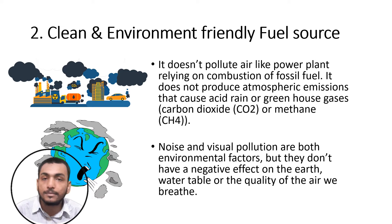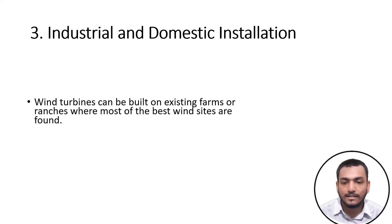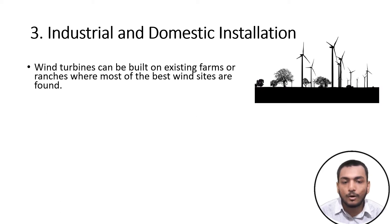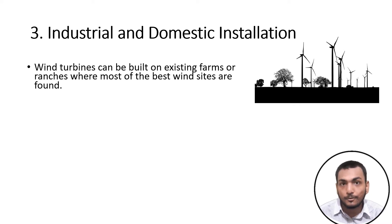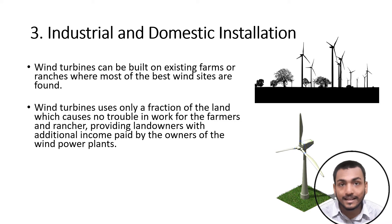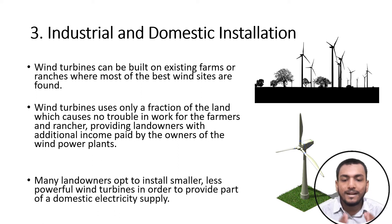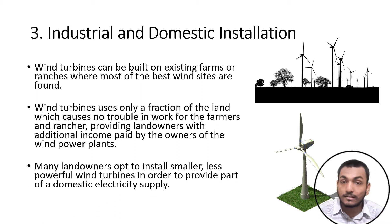Advantage three: industrial and domestic installation. Wind turbines can be built on existing farms or ranches where most of the best wind sites are found. Wind turbines use only a fraction of the land, causing no trouble for farmers and ranchers, while providing landowners with additional income paid by the owners of wind power plants. Many landowners also opt to install smaller, less powerful wind turbines to provide part of their domestic electrical supply.